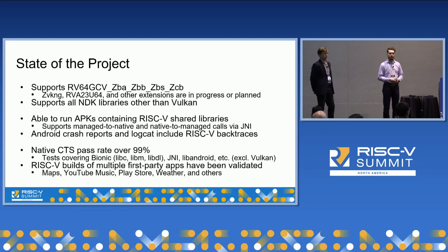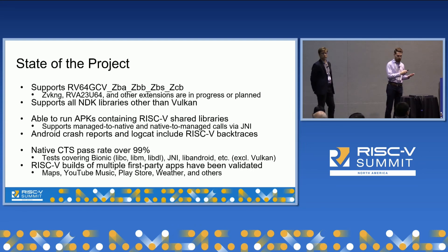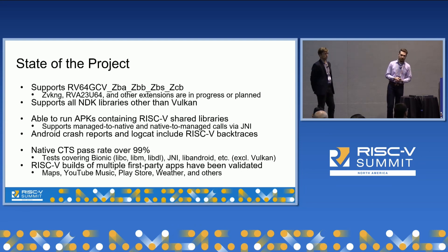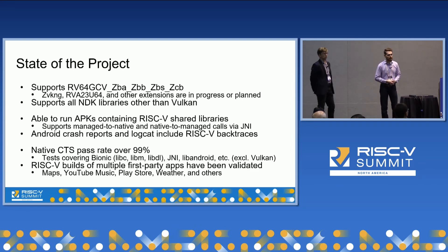We support all NDK libraries other than Vulkan right now — so lib-android, lib-egl, things like that. With that, you're able to run Android APK files that contain shared libraries built for RISC-V and make managed-to-native calls, calling from your Java side to your native side and going the other way from native to managed code through JNI and something called the native bridge, which we'll discuss. If your app crashes, both the crash report and logcat output will include a backtrace of the RISC-V code that was running at the time, along with RISC-V register values.